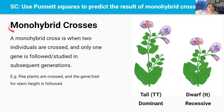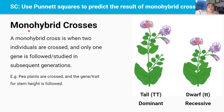Before we get into monohybrid crosses, crosses in general — mating two individuals together — are used by geneticists to study the inheritance patterns of certain traits or genes. It's really important to understand how traits or genes are inherited, because farmers raising livestock, or scientists and doctors studying genetic diseases, want to track both favourable and harmful traits and alleles.